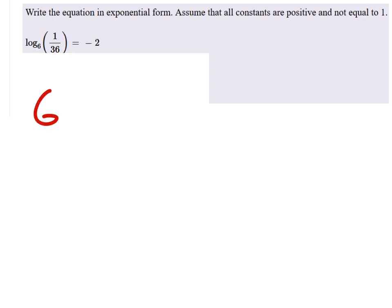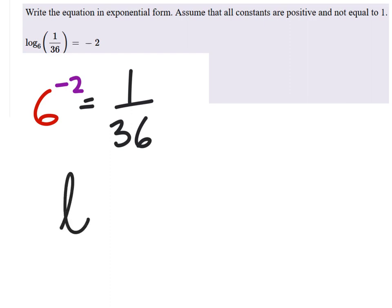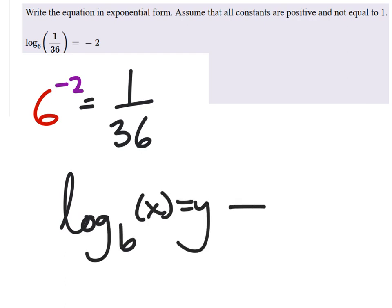So we have 6 to the power of negative 2 equals 1 over 36. We're just taking that from the form. So our log base B of X equals Y. We can transform this either way. We have B to the power of Y equals X.